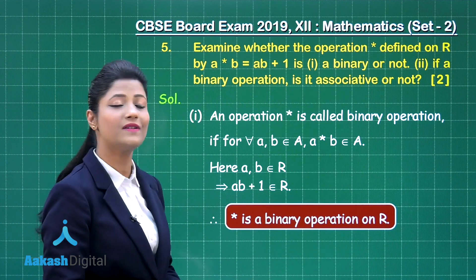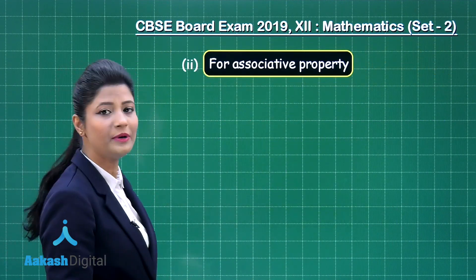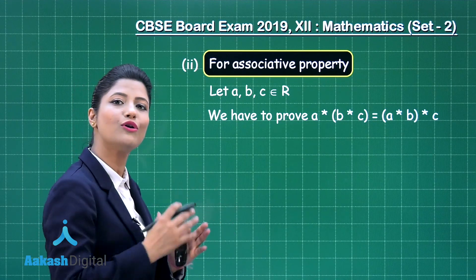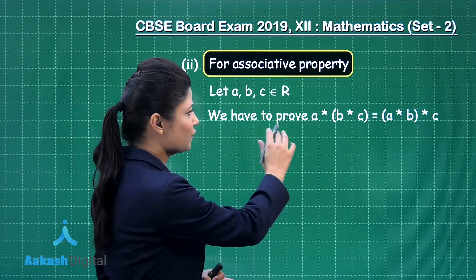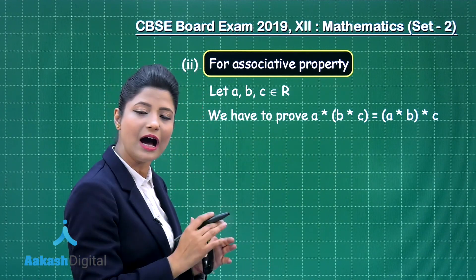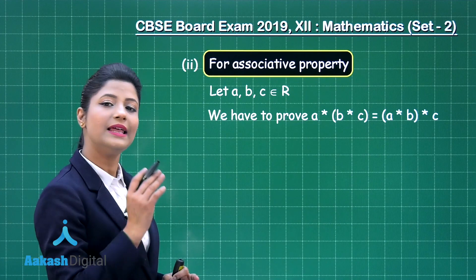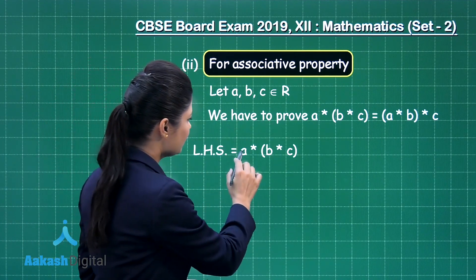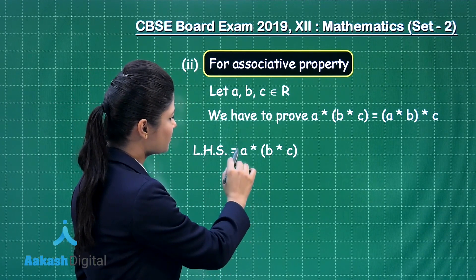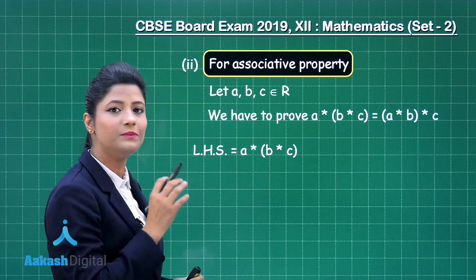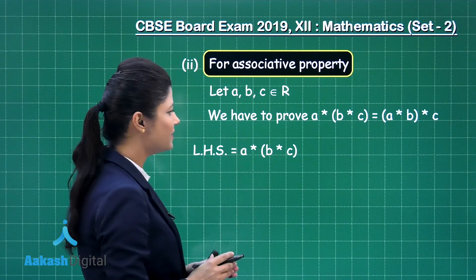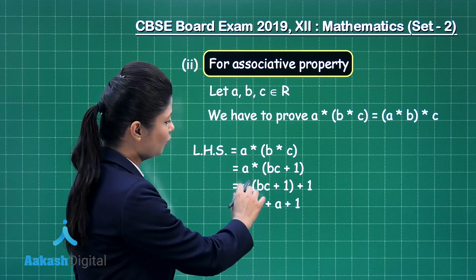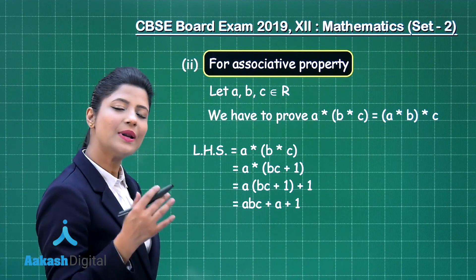In the second part, we check whether the operation is associative. For the associative property, where A, B, C belong to ℝ, we must prove that A★(B★C) = (A★B)★C. Let us obtain the left-hand side: A★(B★C). First, B★C = BC + 1. Then A★(BC + 1) = A(BC + 1) + 1 = ABC + A + 1.